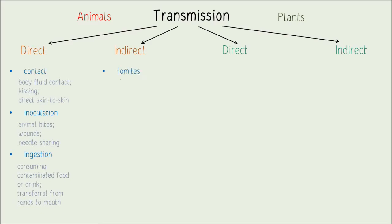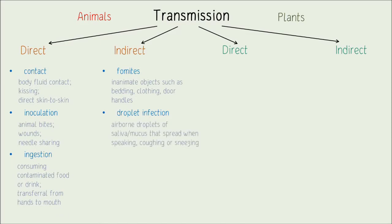Indirect transmission in animals involves fomites — inanimate objects such as bedding, clothing, and door handles on which pathogens can survive. If not sterilised, another person can contract them, which is why sanitising surfaces is so important. Droplet infection involves airborne droplets of saliva or mucus when coughing, sneezing, or speaking. Lastly, vectors — either living or non-living — also transmit pathogens.